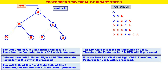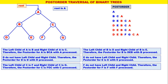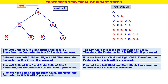Now the leftmost is F. F does not have a left child or right child. Therefore, the post-order for F is F only, with F processed. Now the leftmost is G. G does not have a left child or right child. Therefore, the post-order for G is G only, with G processed. Now all the nodes have become red, meaning all the nodes are traversed.